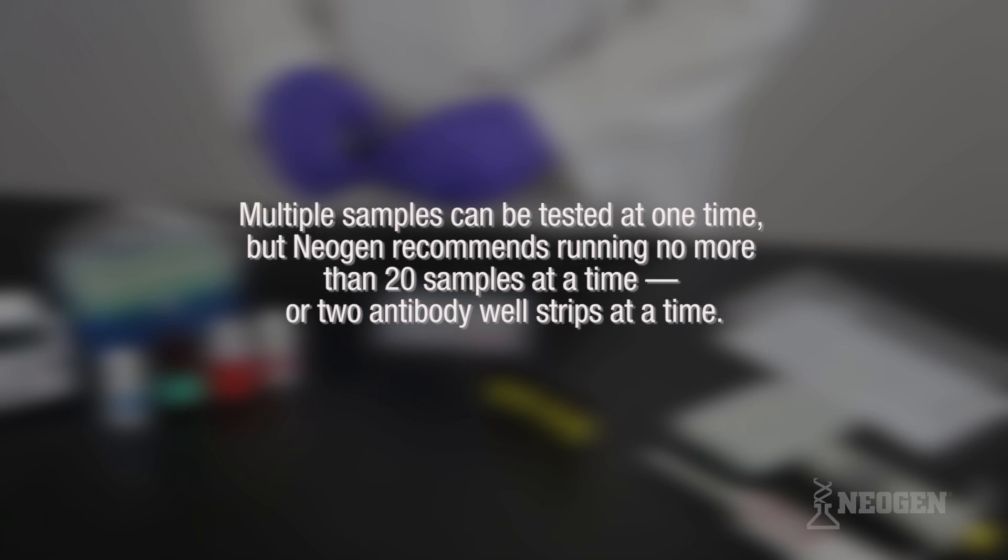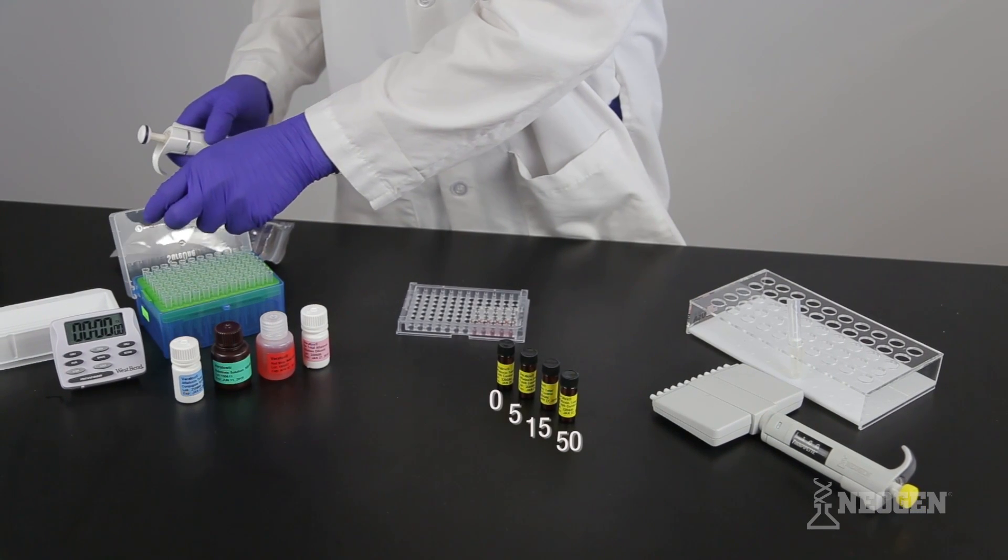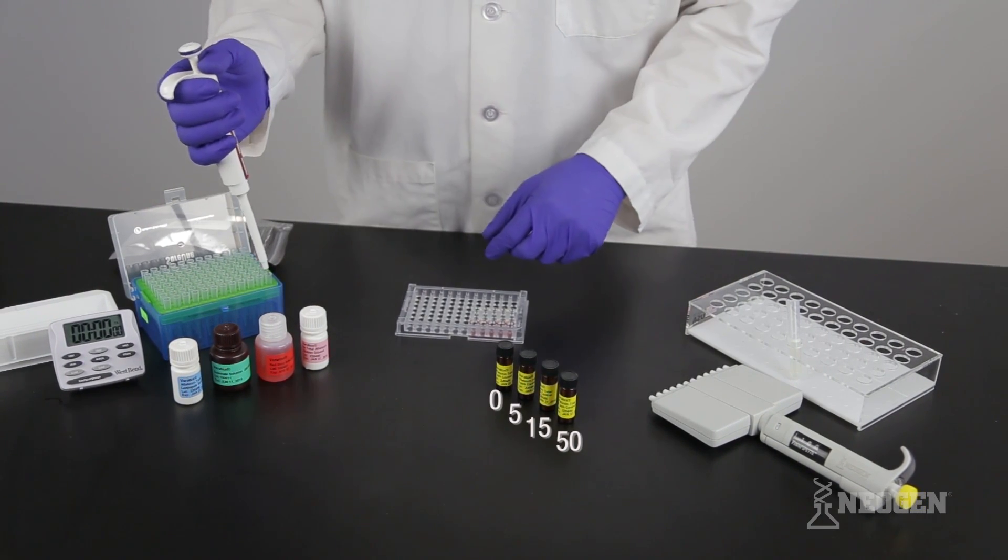Multiple samples can be tested at one time, but Neogen recommends running no more than 20 samples at a time, or two antibody well strips at a time. Put the controls in order from the lowest to the highest concentration.